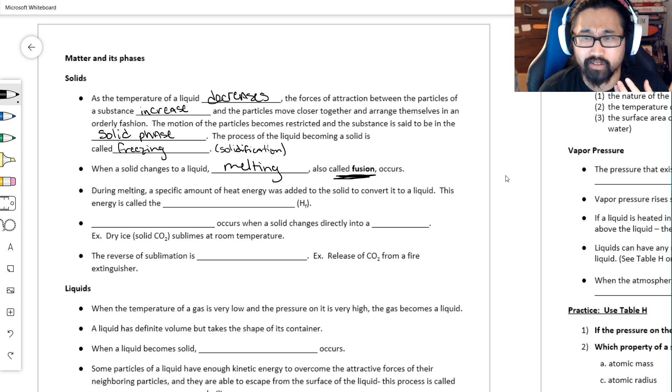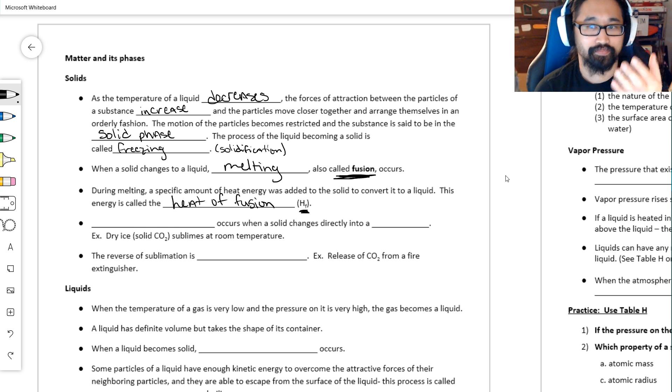During melting, you have to add a very specific amount of energy to convert it to a liquid, and we call that energy the heat of fusion. This is why I brought that up. Heat of fusion has a symbol H with subscript f—H for enthalpy or heat, f for fusion.